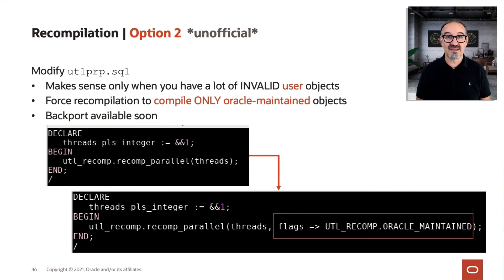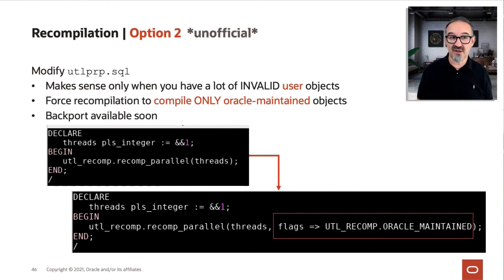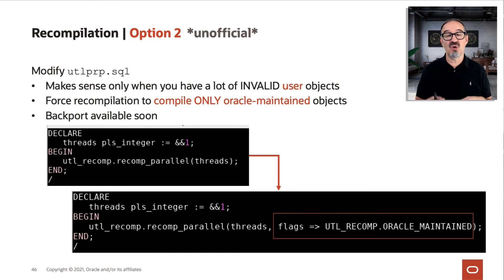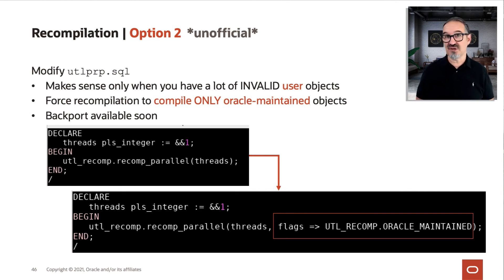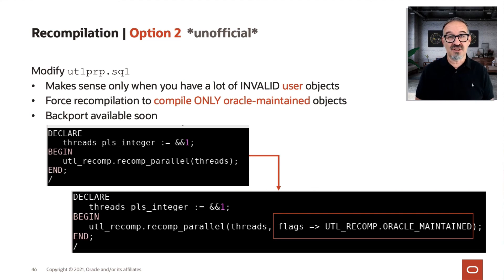If you want to skip that, there's a currently undocumented flag available. In UTL-PRP, you find a UTLRecomp call — Recomp parallel with threads. If you add this flag, UTLRecomp Oracle maintained, then the recompilation will only attempt Oracle maintained objects with the Oracle maintained flag set to yes — so only the Oracle objects in the dictionary. This is currently not standard; we are thinking of putting this into the upgrade, so there may be a backport soon. Right now the slide is titled unofficial — it's not supported to adjust Oracle maintained scripts in rdbms/admin, but this could be a workaround when you have too many invalid objects in your user environments.